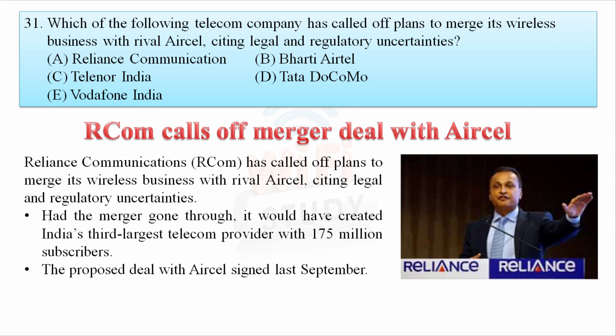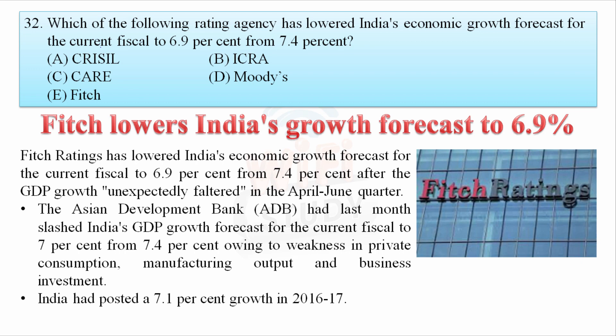Which telecom company called off its plan to merge its wireless business with rival Aircell? Reliance Communications called off its plan to merge with Aircell, citing legal and regulatory uncertainties. Also, Fitch rating agency lowered India's economic growth forecast for the current fiscal to 6.9% from 7.4%, while ADB lowered its forecast from 7.4% to 7%. India itself posted 7.1% growth in 2016-17.